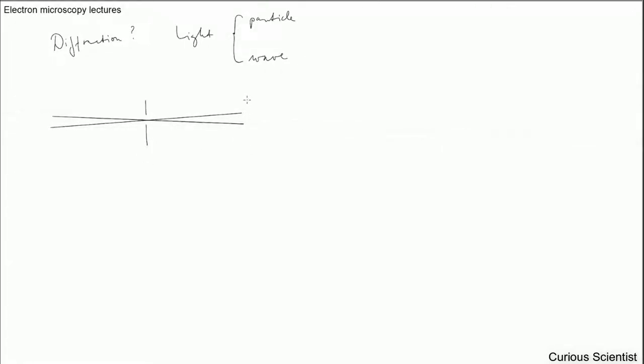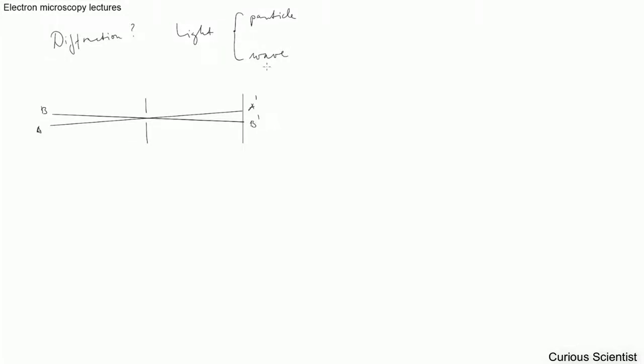So why do we care about the diffraction? Well, firstly, light is usually treated either as a particle, like a photon, or a wave. When we treat it as a wave, we can think about the light optical microscope's aperture as one slit.